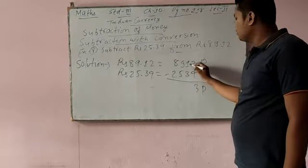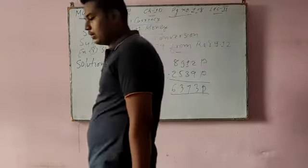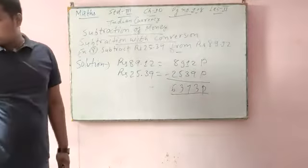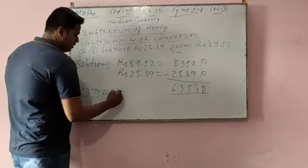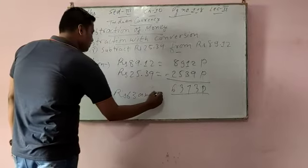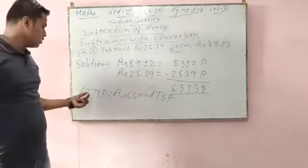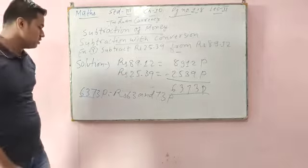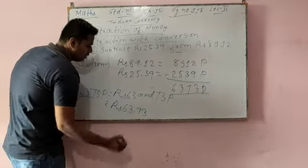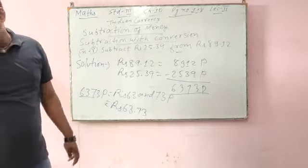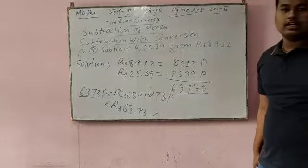12 minus 9 is 3, 10 minus 3 is 7 — wait — subtracting: we get 6373 paise. So 6373 paise — can I write rupees 63 and 73 paise? Yes. Because 2 digits are rupees and 2 digits are paise. So rupees 63 decimal 73. When you subtract rupees 25.39 from rupees 89.12, you will get rupees 63 and 73 paise.